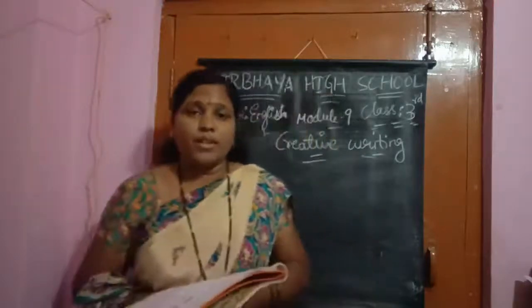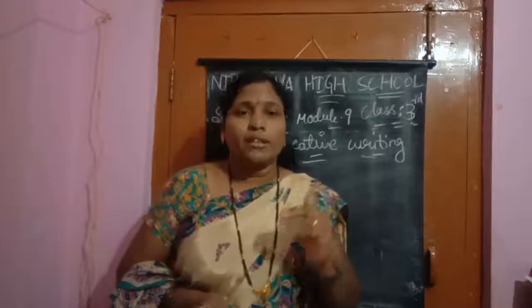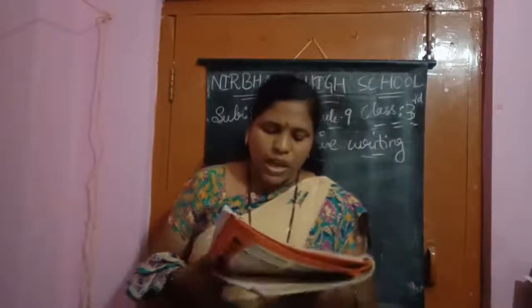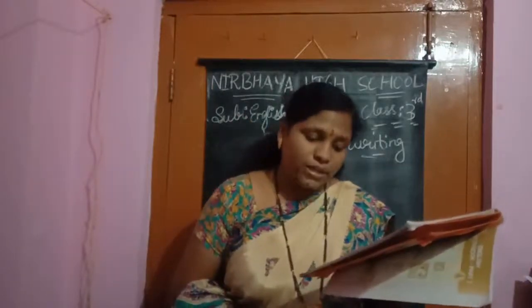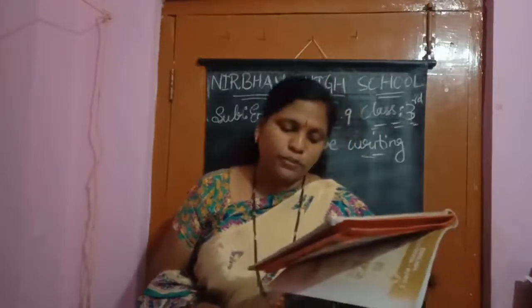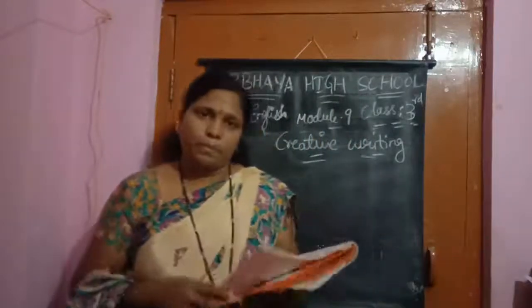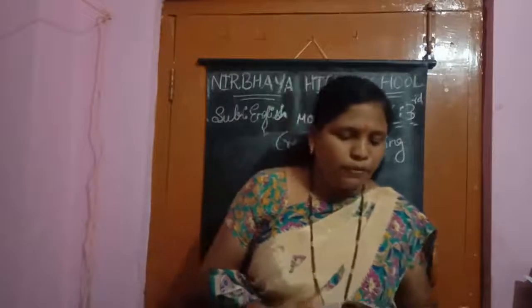A rhyme means verses which end with the same sound. Now identify the rhyming words in the lines given below and underline them in the same color. Example: 'I'm a little spider, watch me spin, if you will be my dinner I will let you come in' — 'spin' and 'in' rhyme. 'I will spin my web to hold you tight and gobble you up in one big bite' — 'tight' and 'bite' rhyme.